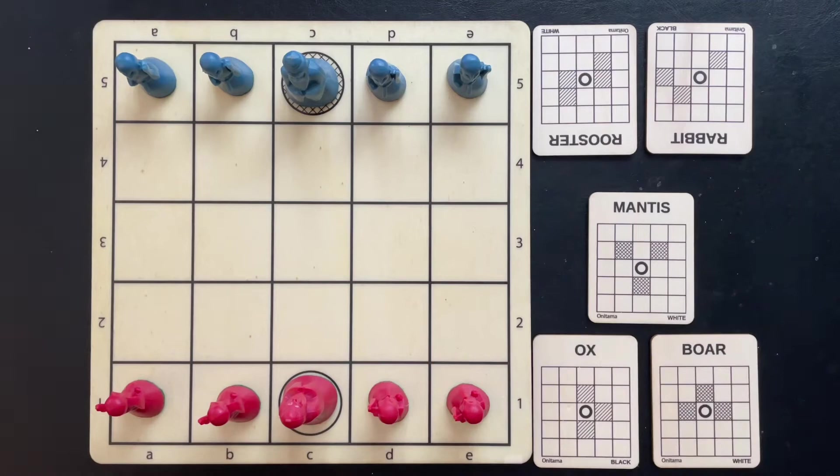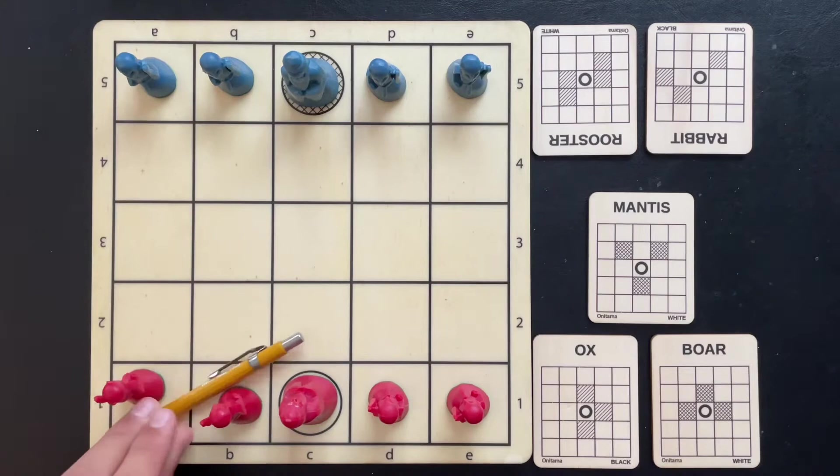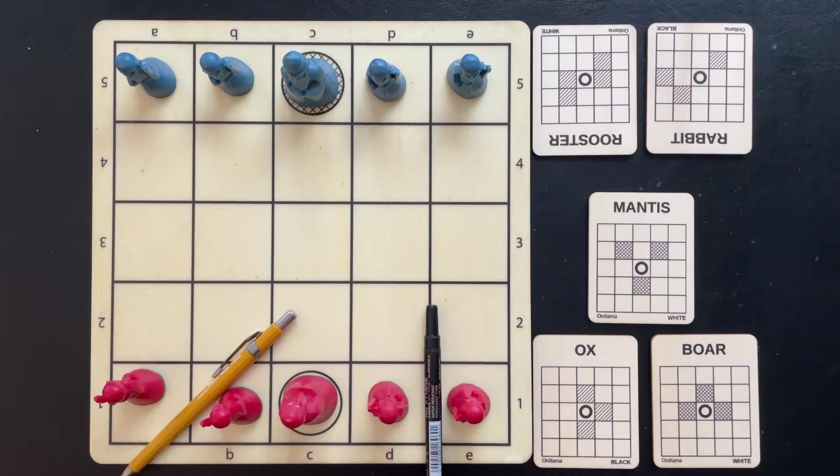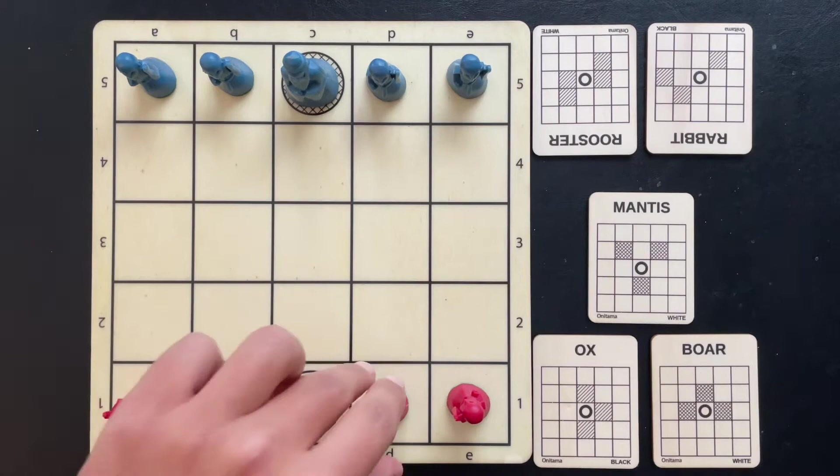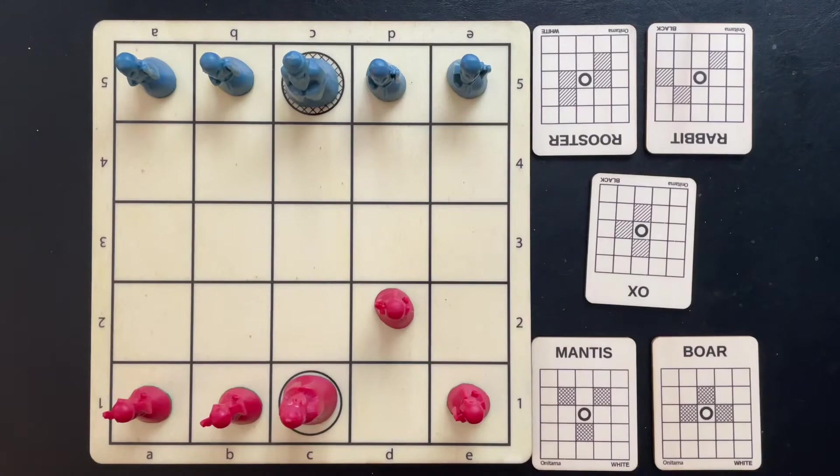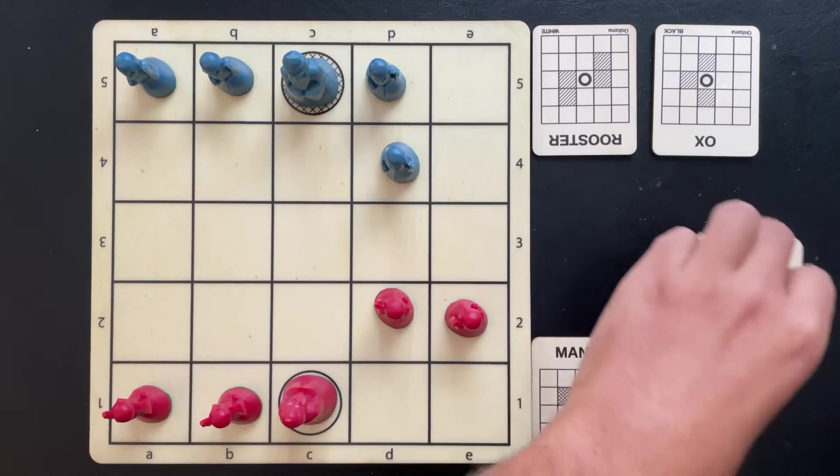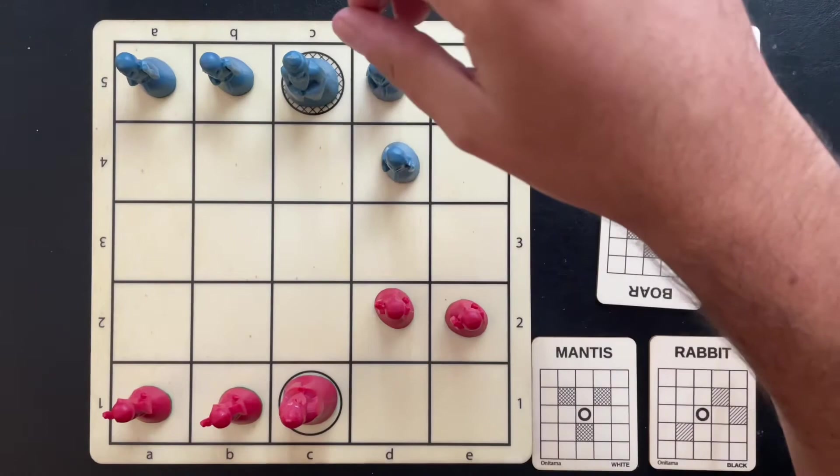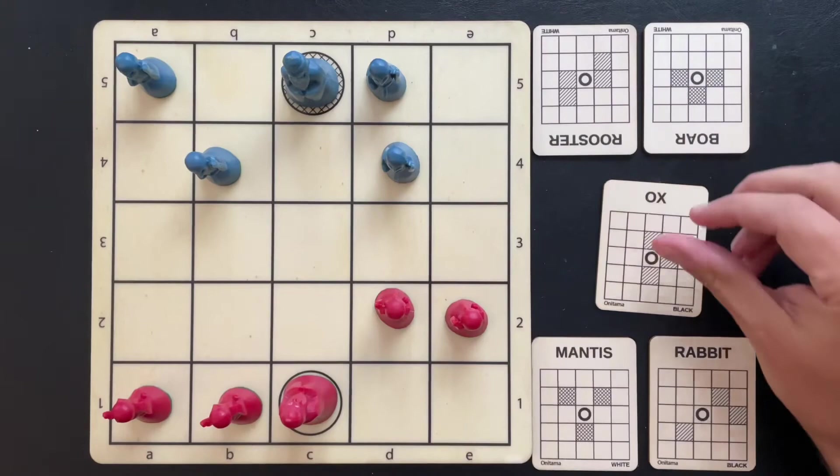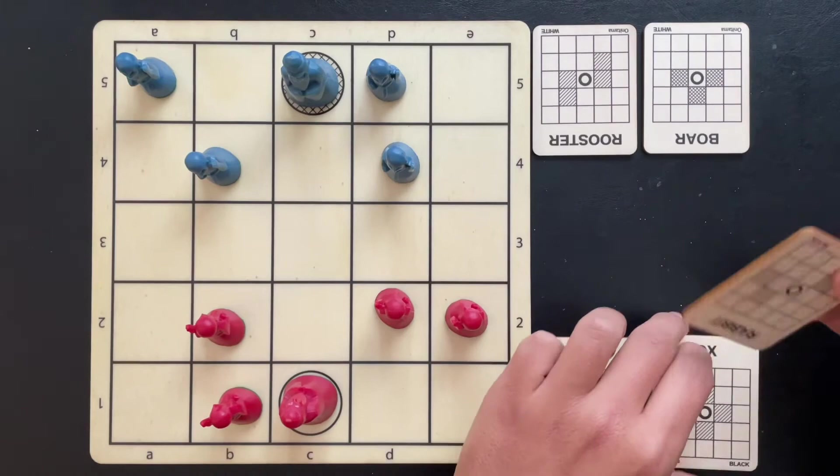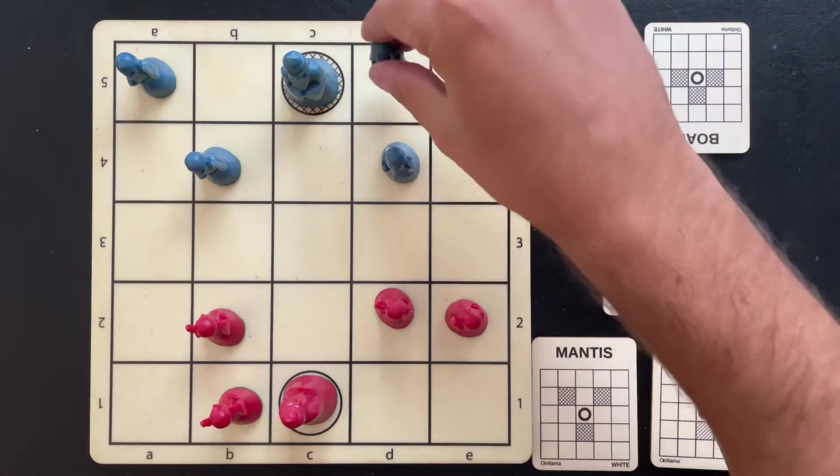By looking at the diagonals we see that we have two right diagonals and two forward cards, so this type of development is the most natural development. So this is what Xenas Erzo accounts for and his first move is Ox D1-D2. To which Knud the Great replies with Rabbit E5-D4, Boar E1-E2, Ox B5-B4, Rabbit E1-D2, Rooster E5-D5-C4.